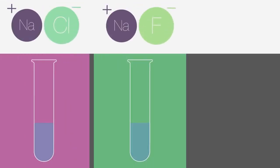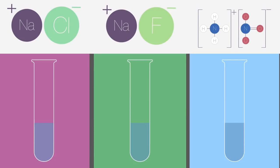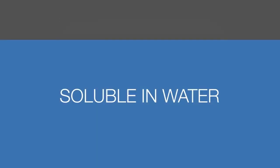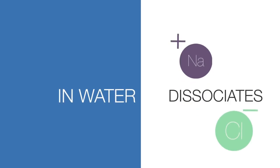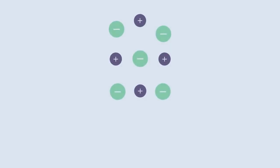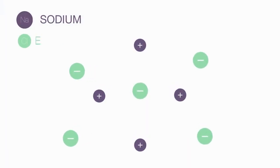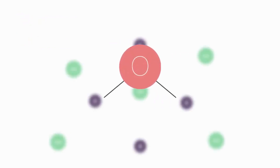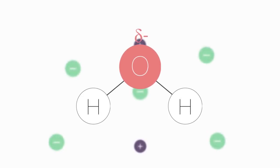Sodium chloride, sodium fluoride, and ammonium nitrate can all dissolve in water, as we know — or else we wouldn't be able to flavor our soups, brush our teeth, or fertilize our plants. Most ionic compounds are soluble in water. In water, an ionic compound can dissociate into its ions. So when we dissolve sodium chloride, it will dissociate into sodium and chloride ions. These ions become stabilized in water due to the polar nature of water.